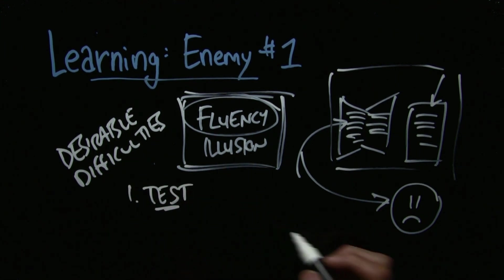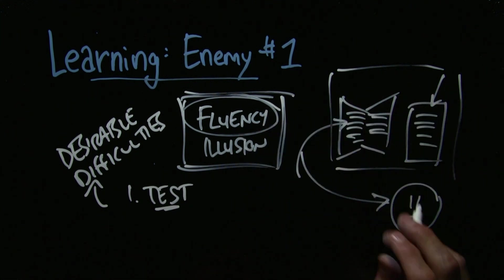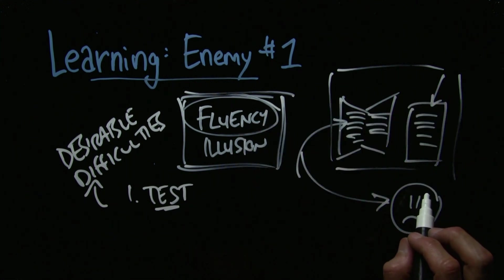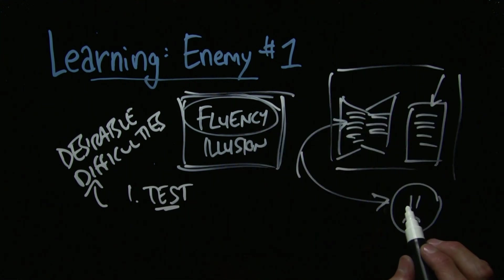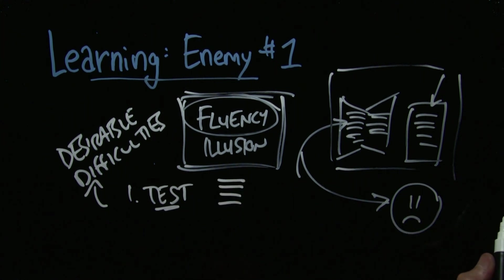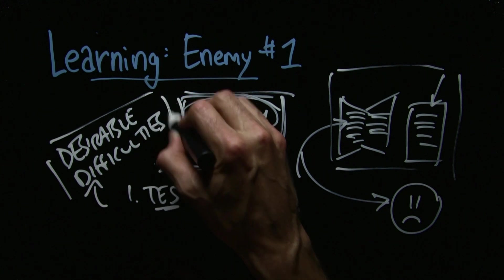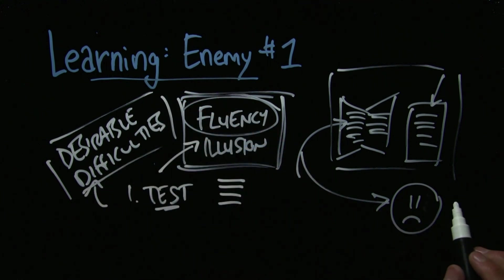They go through a bunch of different ways you can add desirable difficulties. Let's talk about testing yourself. You close your book, you get rid of your notes, and you ask yourself, what's the most important thing from that chapter? Can you write it down? Can you reflect on it? Oh man, that feels disfluent. You pop the bubble of this fluency illusion. All of a sudden it's hard and that difficulty is really good for you.